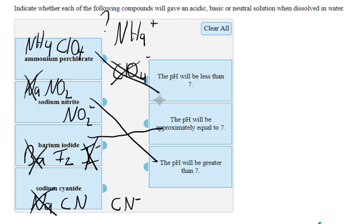Well, cyanide is the conjugate base of hydrocyanic acid, which is a weak acid. So this will bring the pH greater than 7.